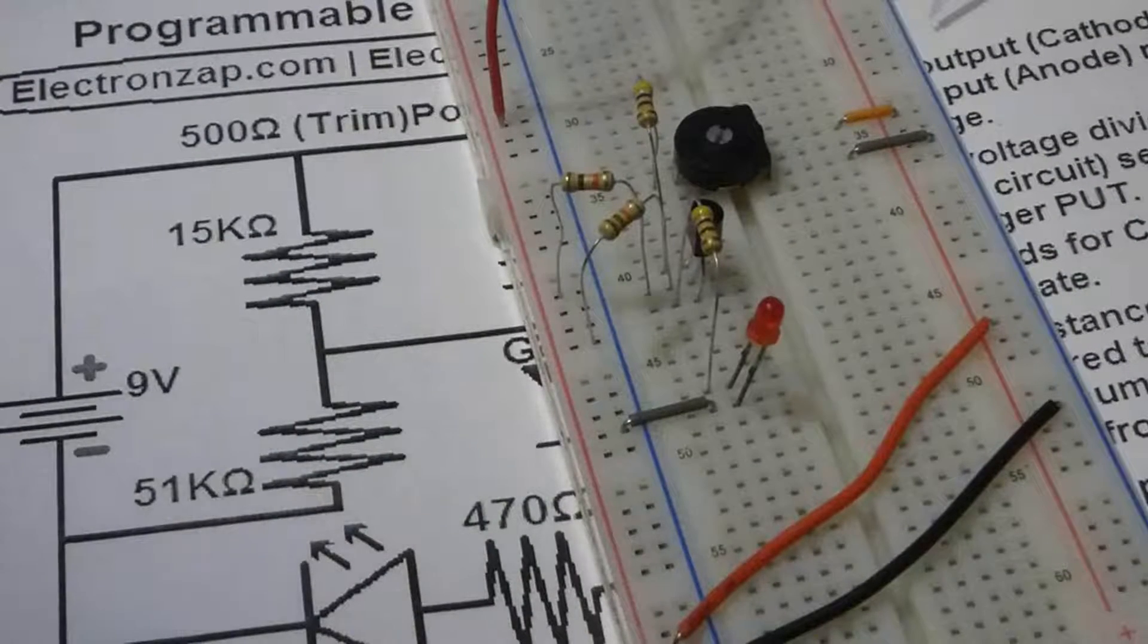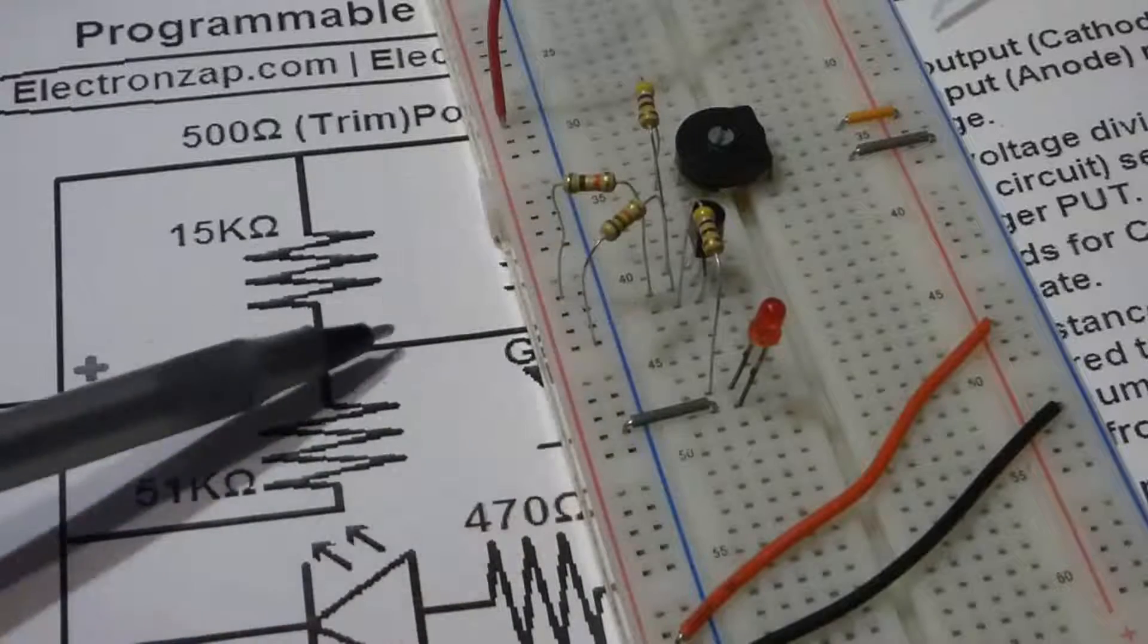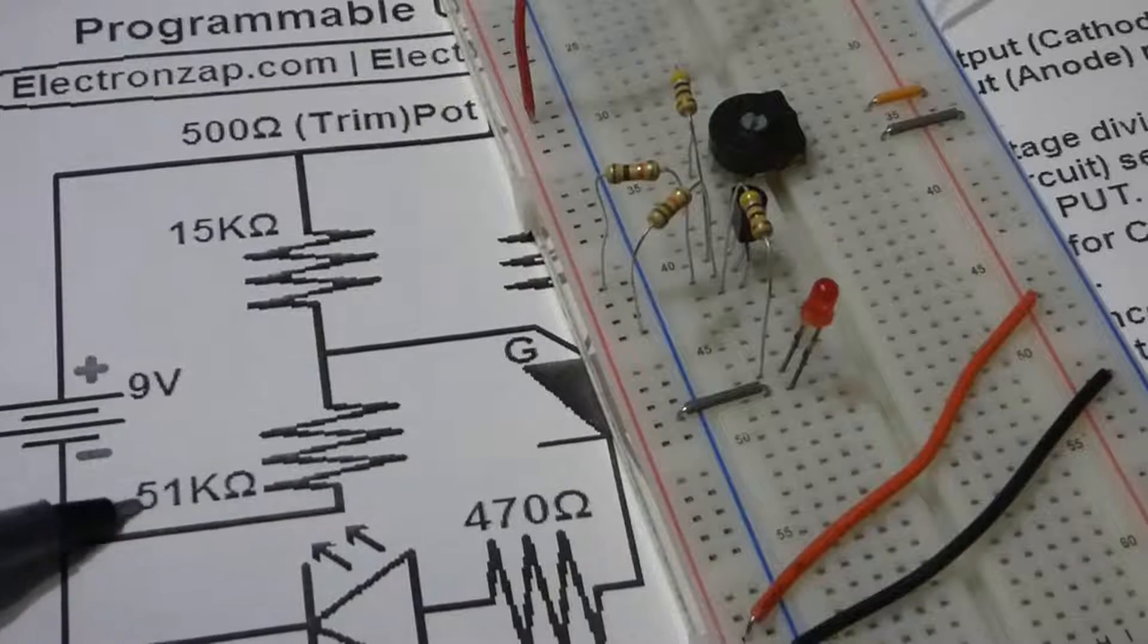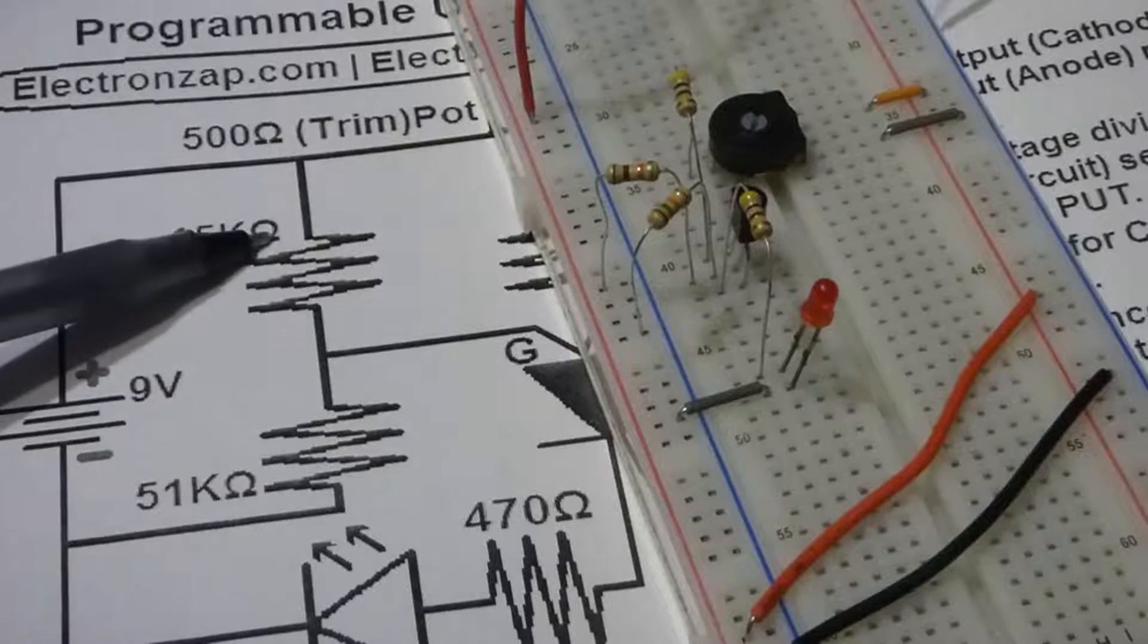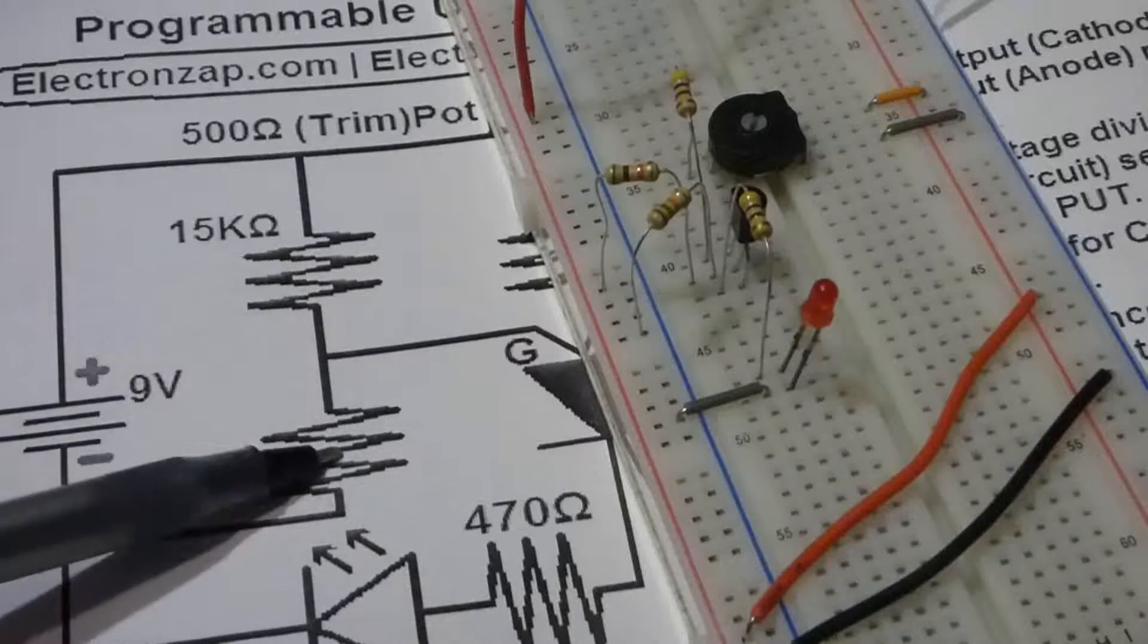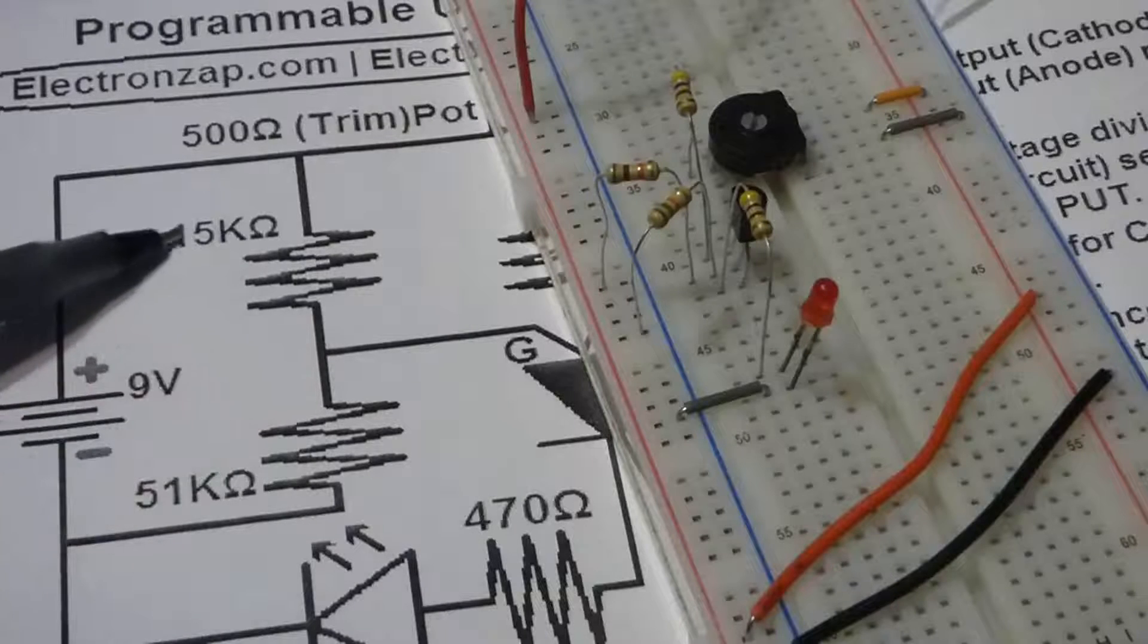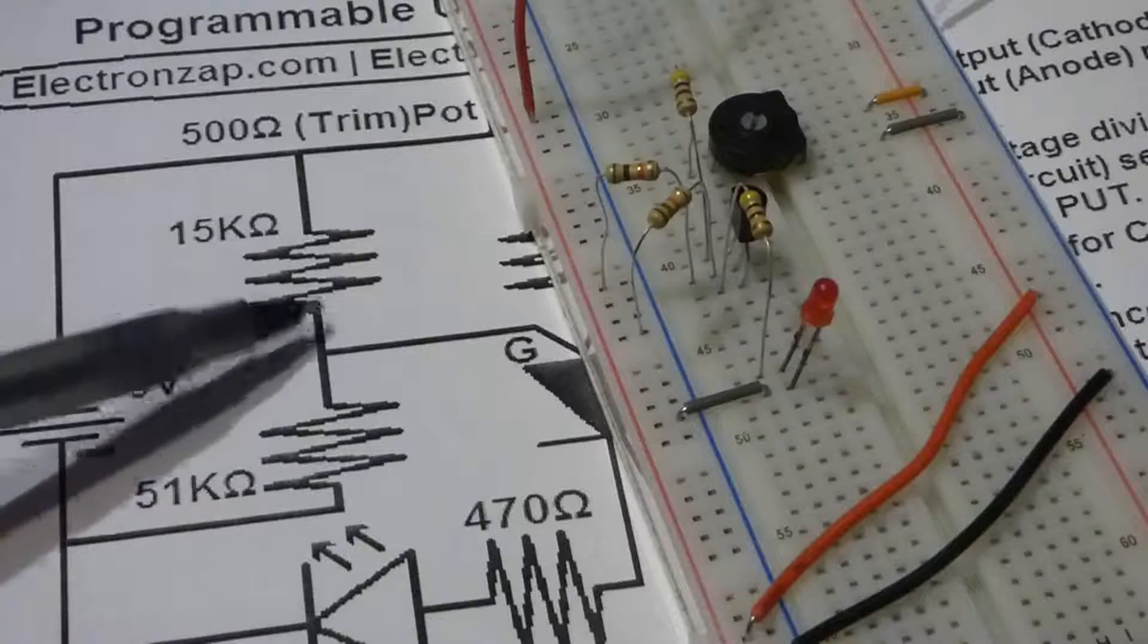Okay, so now that I demonstrated that, what I did was these two resistors here which go to the gate—right now I took this 51-kiloohm resistor, put it up here. I took this 15-kiloohm resistor and put it down there.